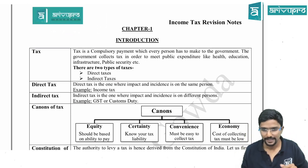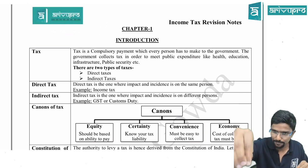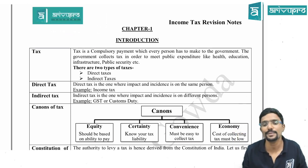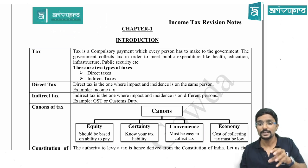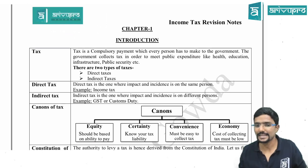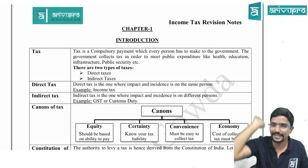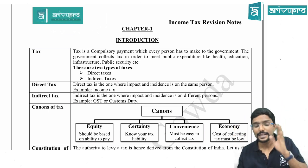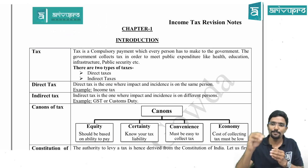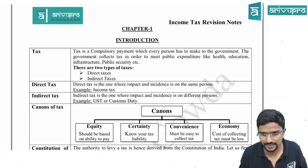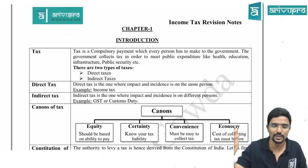Direct tax is the one where impact and incidence is on the same person. Example is income tax. Impact means who is ultimately suffering the tax; incidence means who has the liability to pay the tax. Indirect tax is the one where impact and incidence is on two different persons. Example is GST or customs.